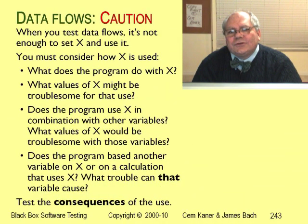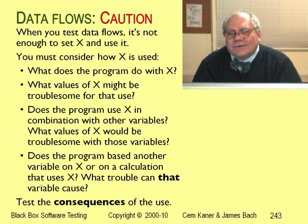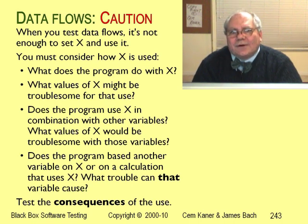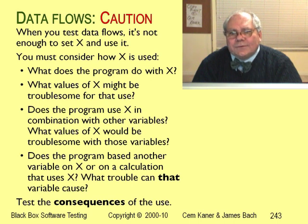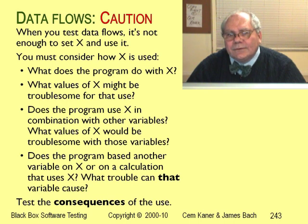In the example so far, G has done something very simple with X. What if it did something more complicated, like dividing some other number by X? In that case, the specific value of X would be very important. Whenever you test a variable, it's important to ask how the program will use the value of that variable. We want to test the variable with different values to best test the different uses. Testing for consequences — testing in a way that considers what the program does with a variable whenever you set its value — is one of the things that sets skilled testers apart from juniors.